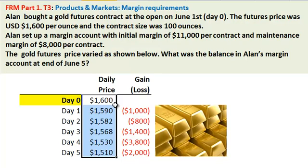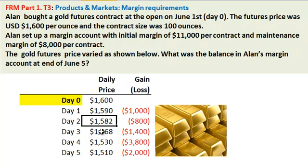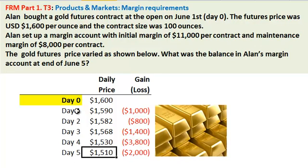Now this is not the spot price of gold, but the futures price. We're not given the maturity — it doesn't matter. By design, it's dropping rather dramatically over the five days. And the question is: what is the balance in Alan's margin account at the end of these five days, or June 5th?